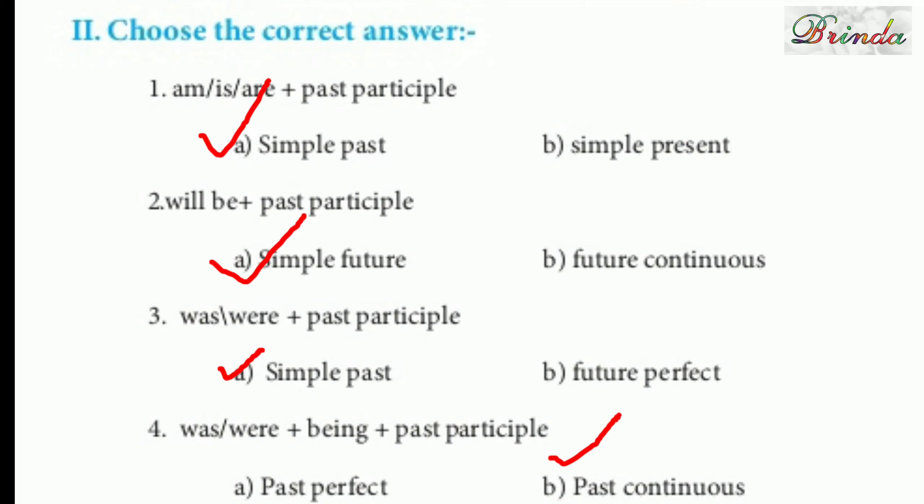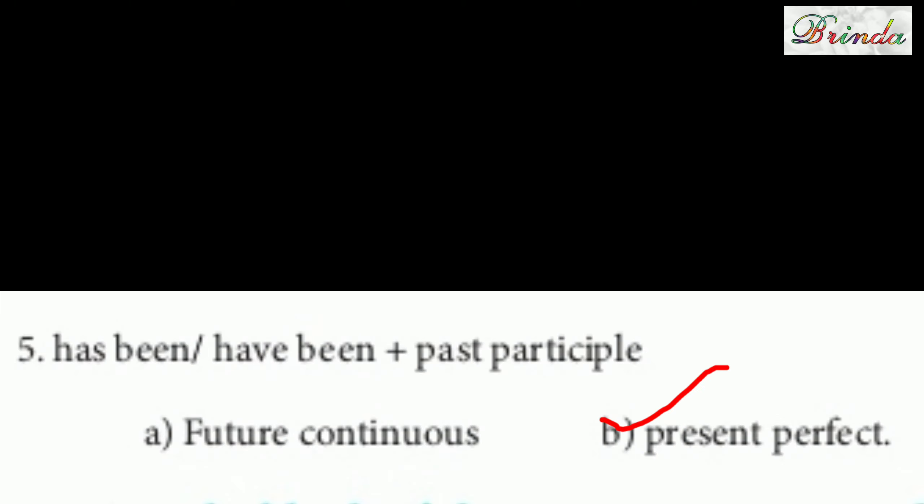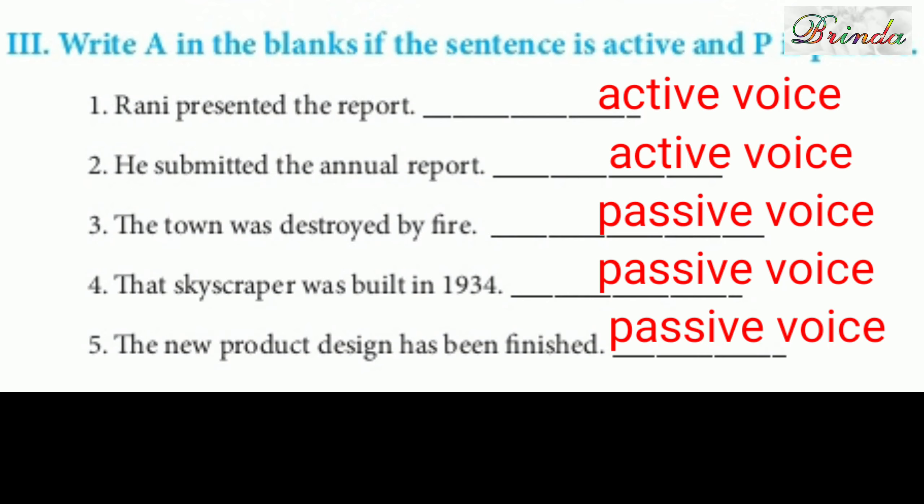Fifth one: 'Has been / Have been + past participle.' The options are future continuous and present perfect. The answer is Present Perfect tense.